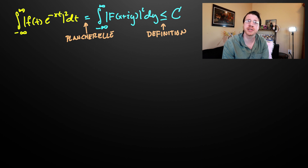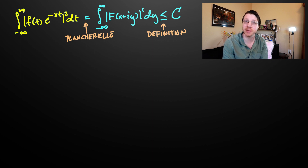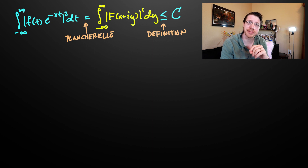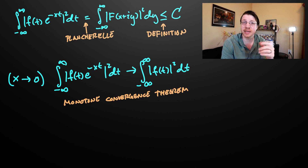To show the norm bound, we exploit the Plancherel theorem again. We take the integral from negative infinity to infinity of the magnitude of our signal times e to the minus xt, squared. Using the isometry of the Fourier transform between L2 functions — which preserves norms — we can appeal to the L2 norm along the vertical line with real part x of our analytic function, and this agrees with the previous integral. This integral is bounded by some constant from the hypothesis. Letting x tend to zero, we approach the L2 norm of our signal, and the sequence is uniformly bounded, giving us a bound on the L2 norm.